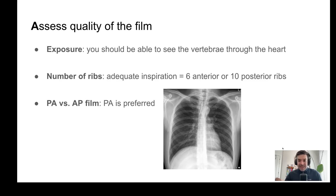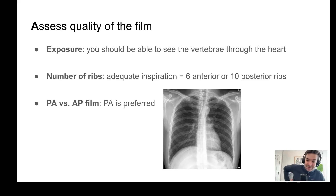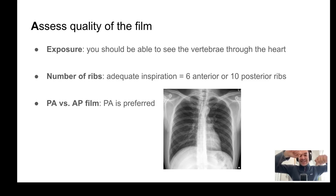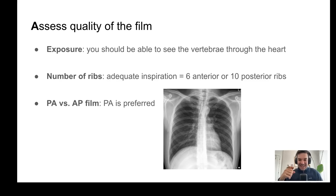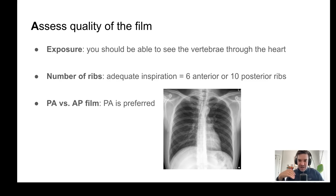That means there's been sufficient inspiration for a high-quality film. PA is preferred to AP. With PA, the x-ray beams go from the back forward — the patient stands like this and the x-rays come from behind. AP, when the x-ray beams go anterior to posterior, is not ideal because of the effect on the heart, which can really overcall cardiomegaly.